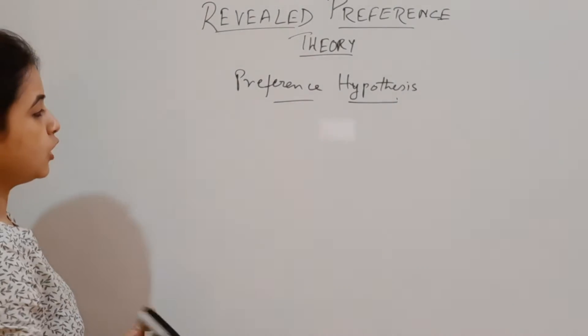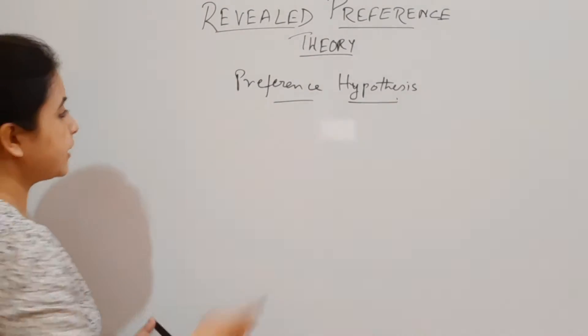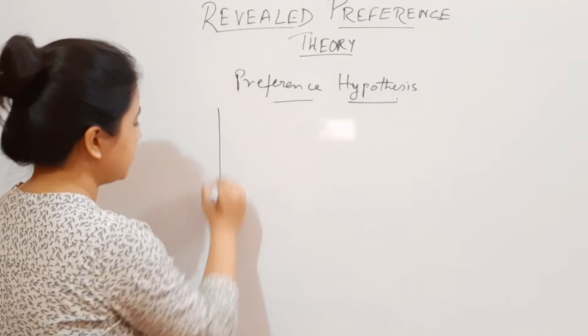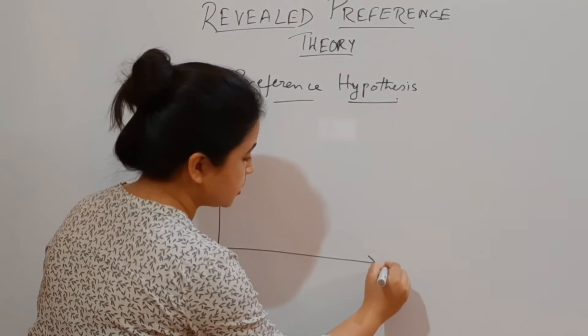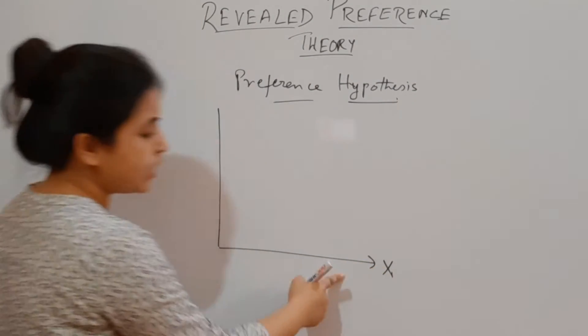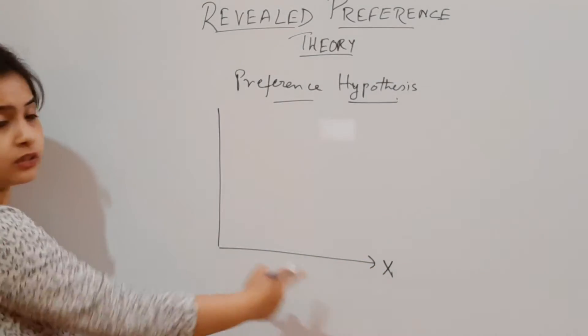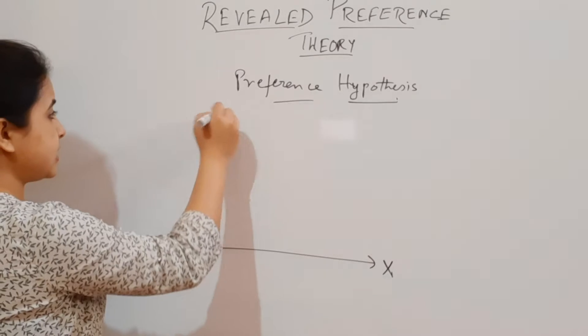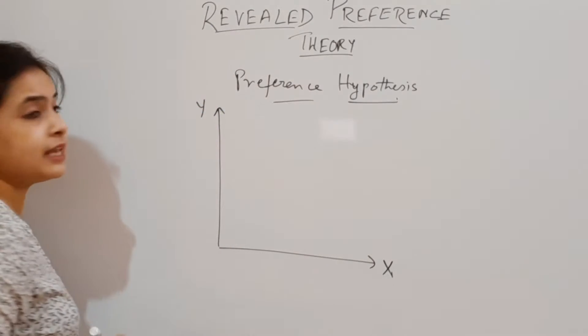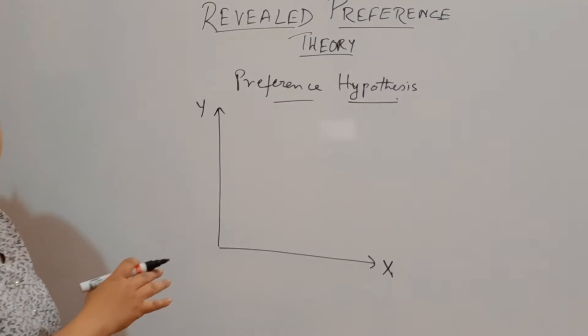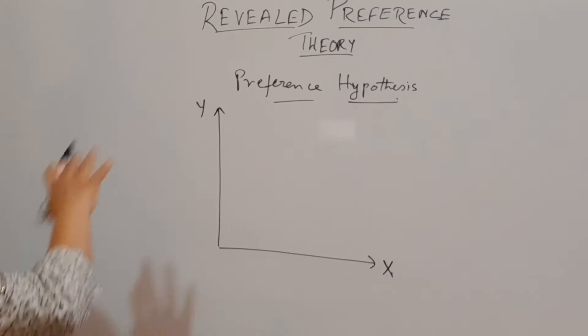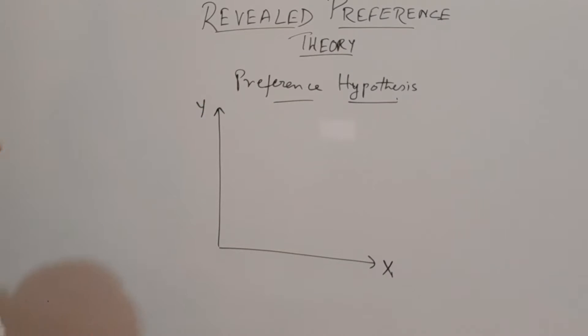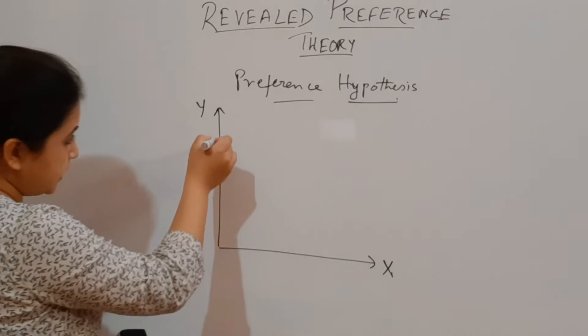Let me explain this with a diagram. We have two axes: good X is measured on the X-axis and good Y is measured on the Y-axis.